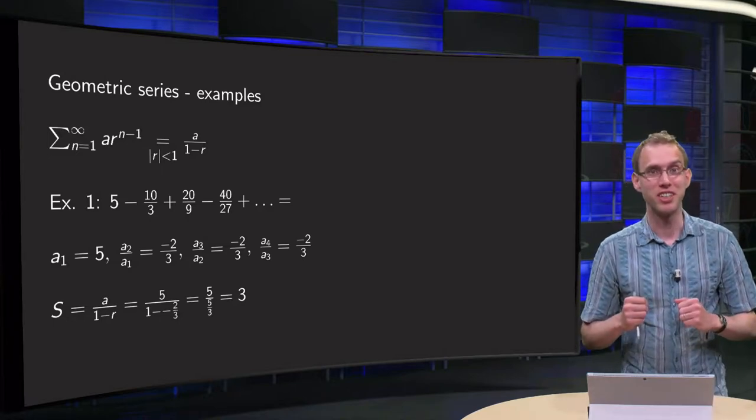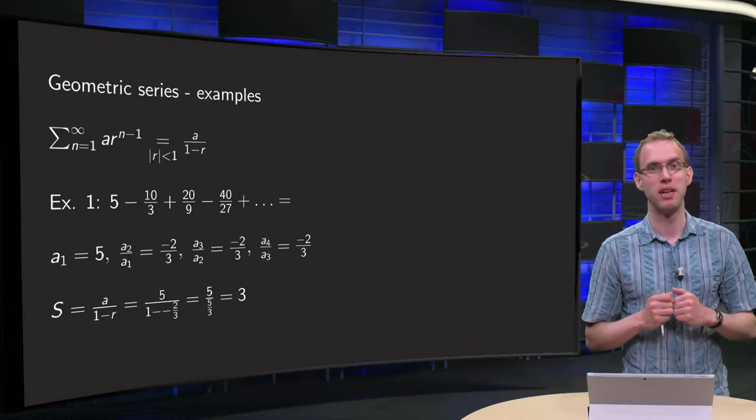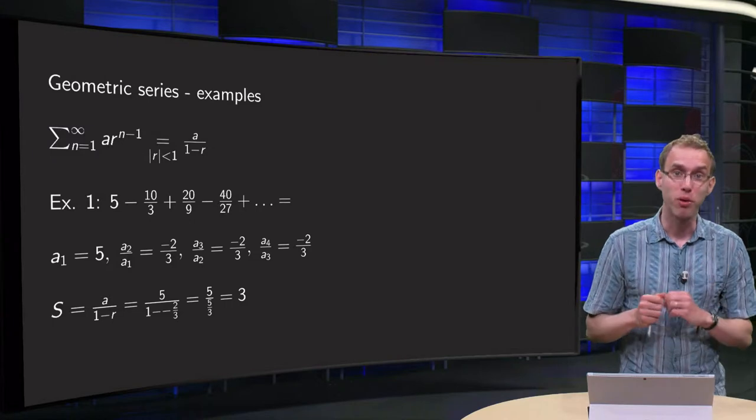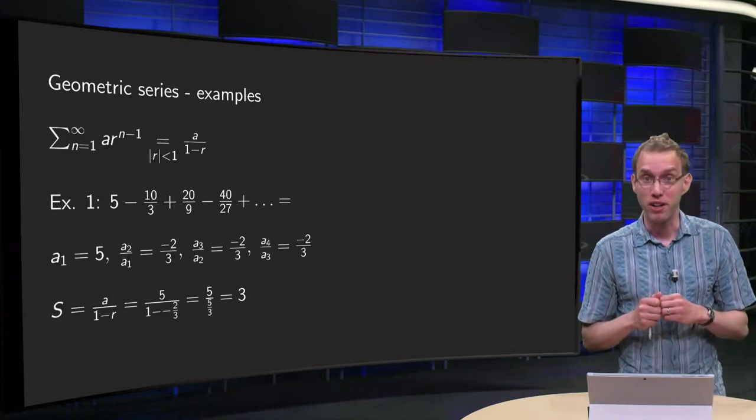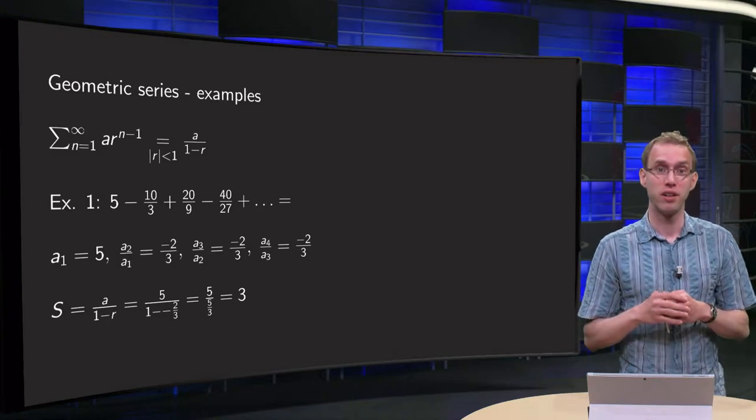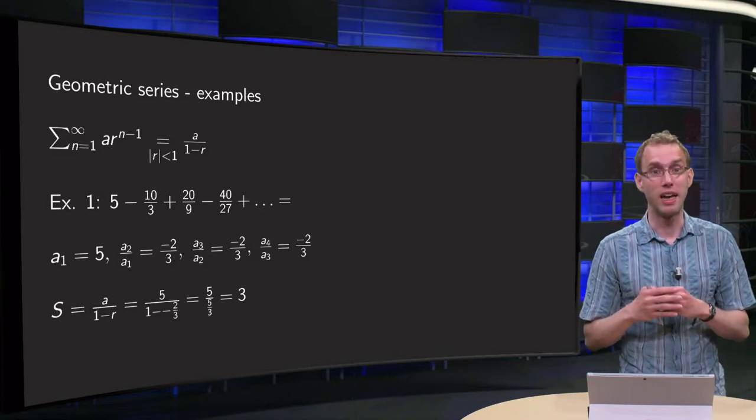You have learned what a geometric series is and how to compute its sum. Let's use this in some examples. Furthermore, we will resolve a paradox we encountered in an earlier video. Why can a faster runner overtake a slower one if the slower one has a certain lead?